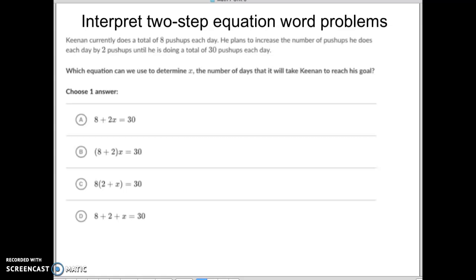So here is our word problem. Keenan currently does a total of eight push-ups a day. He plans to increase the number of push-ups he does each day by two push-ups until he can do a total of 30. First of all, you can notice how they have the total over here. Totals always go after the equal sign.